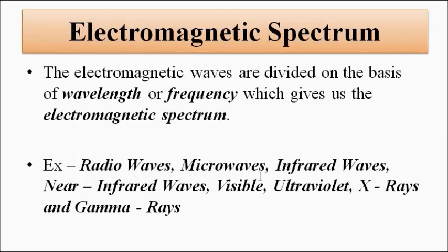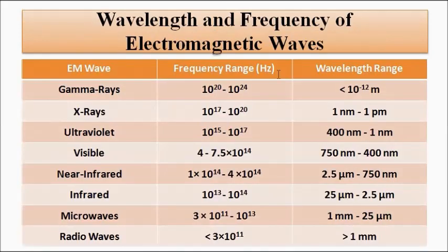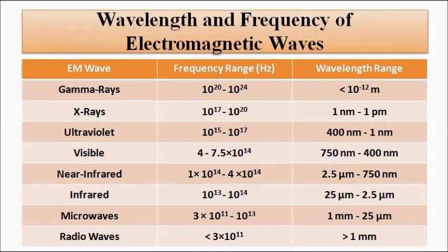The electromagnetic spectrum is divided into various categories such as radio waves, microwaves, infrared waves, near infrared waves, visible light, ultraviolet, X-rays, and gamma rays. The important question here is which of these bands or frequency/wavelength ranges is suitable for an optical communication system, and whether there is any further sub-categorization within that specific band.